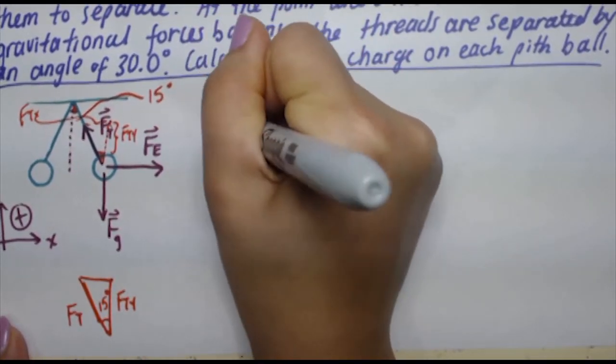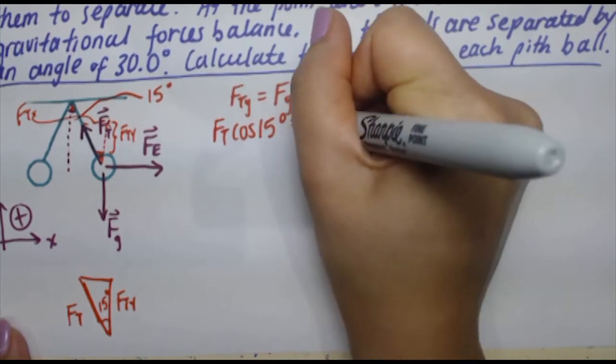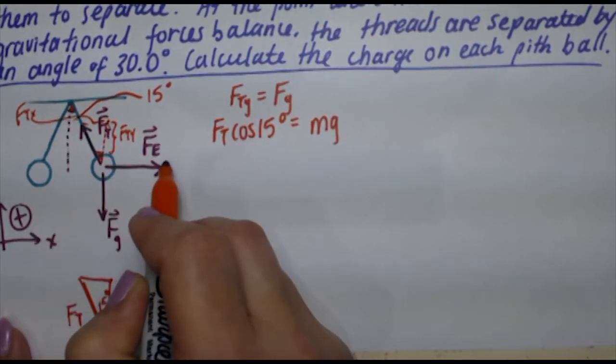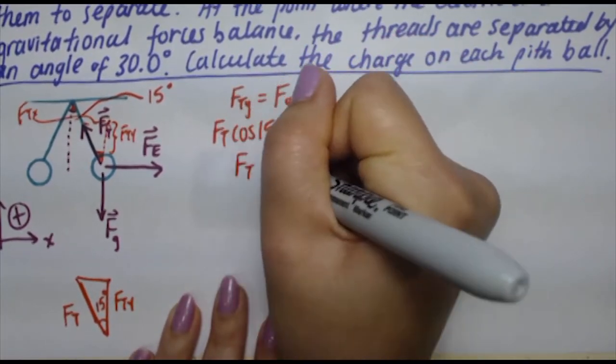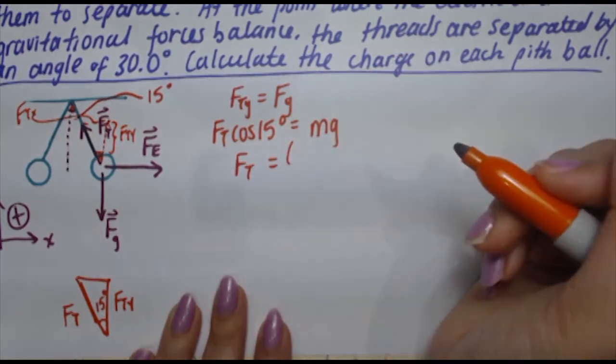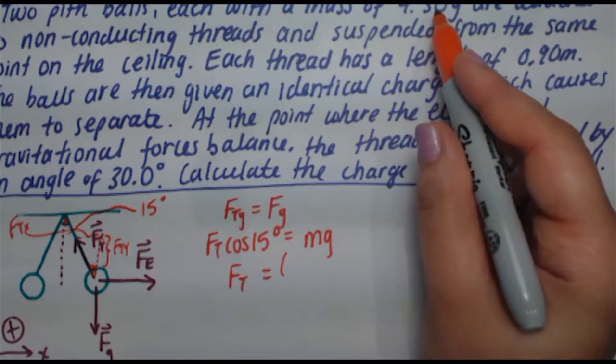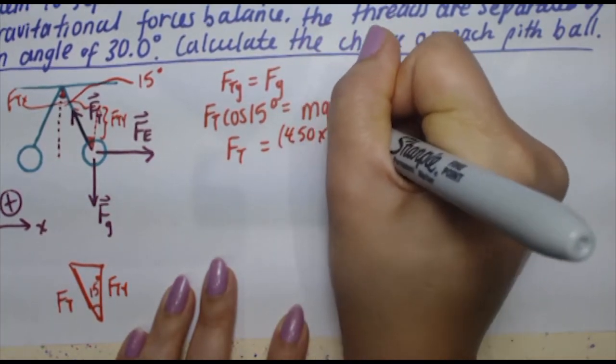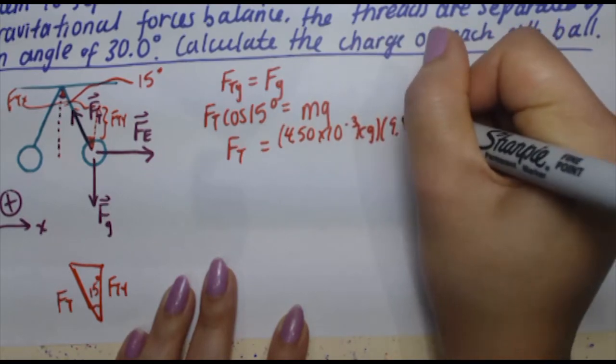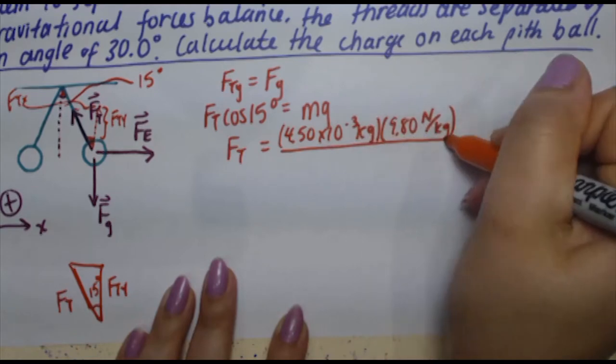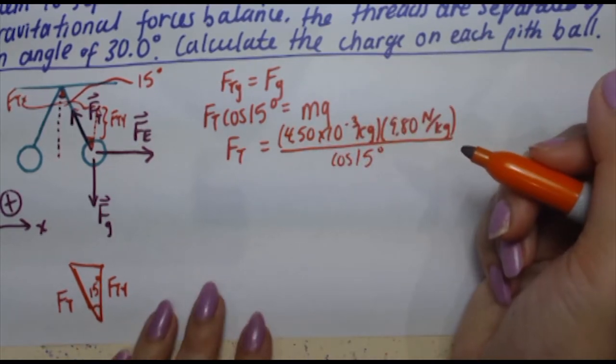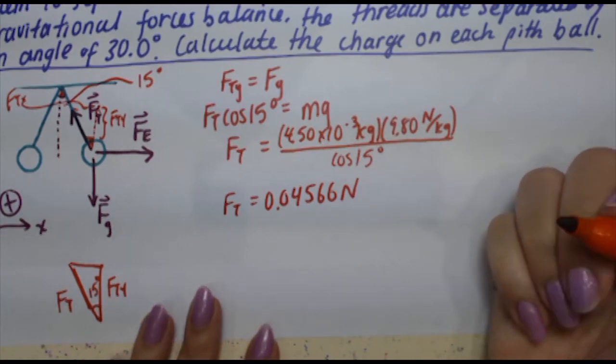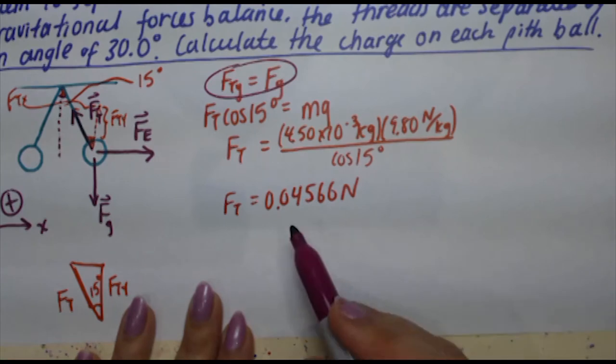So FTY is FT cosine 15 degrees. FG is simply mg because we're dealing with objects on earth. We're going to try to isolate for FT because remember we're trying to figure out FTX so that we set that equal to FE. So let's solve for FT. That means you divide both sides by cosine of 15 degrees. My mass is 4.50 grams, but I have to plug that in in kilograms, so it's 4.50 times 10 to the minus 3 kilograms, times gravity, 9.80 newtons per kilogram, divided by cosine of 15 degrees. Punch those into your calculator and you're going to get a tension force of 0.04566 newtons, approximately.